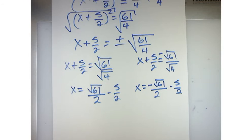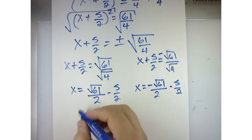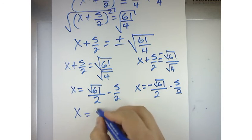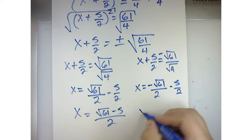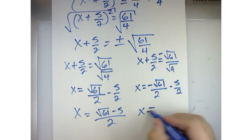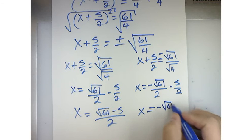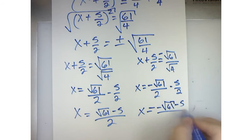You guys with me so far or is this where it starts to look confusing? So, what can I do? Can I clean that up a little bit? Could I write it like this? x equals the square root of 61 minus 5 all over 2, or x equals minus the square root of 61 minus 5 all over 2.